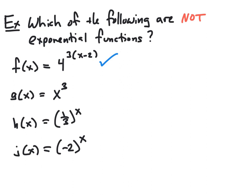The second one, g of x equals x cubed, is not an exponential function. In particular, it does not have a variable in the exponent. The variable here is the base, and the exponent is fixed — it's the number 3. So this is an example of a power function. Power functions and exponential functions are very different.